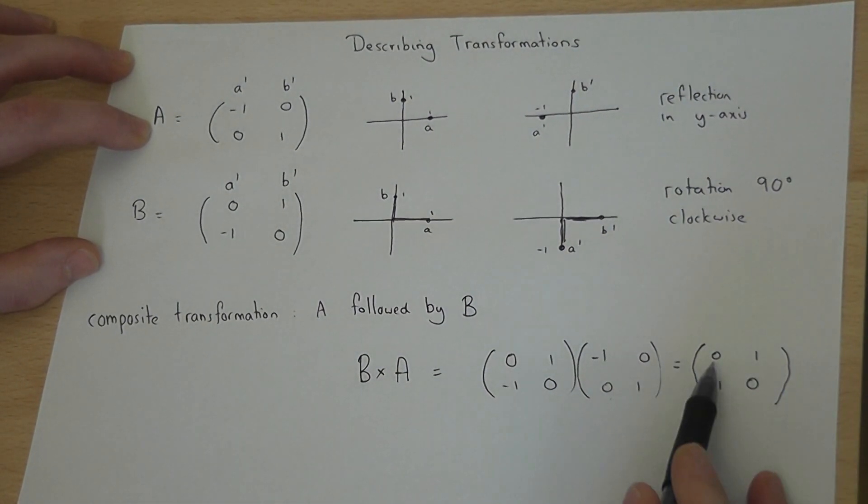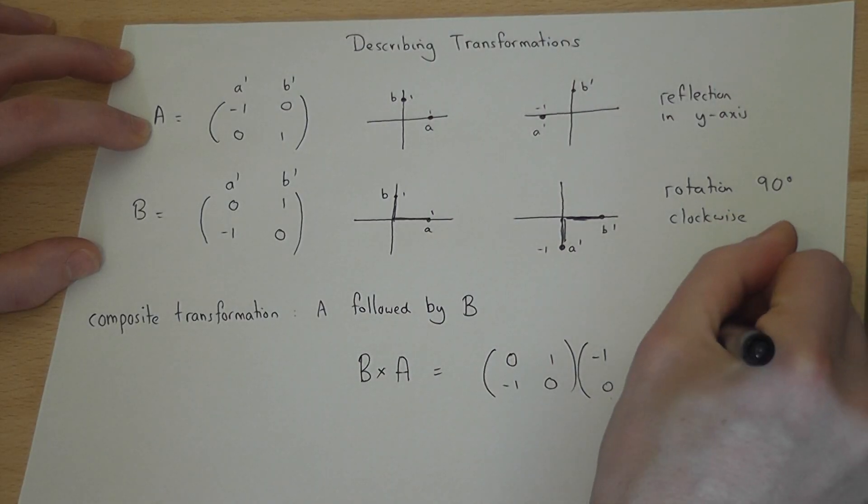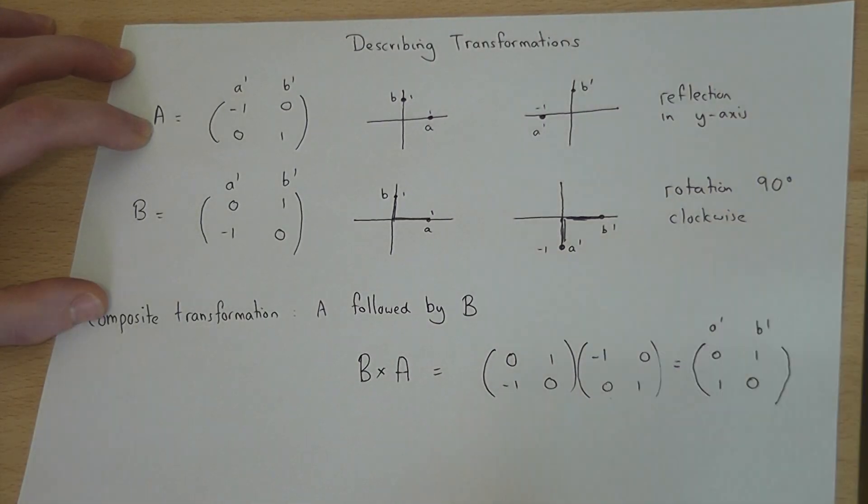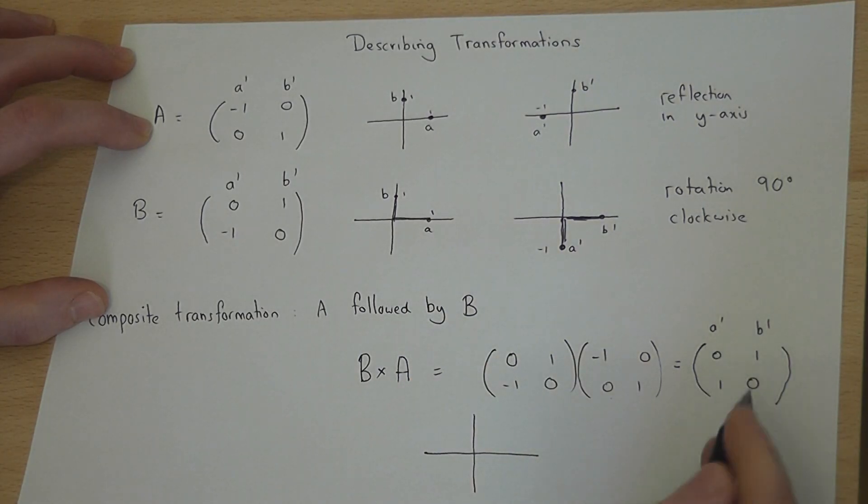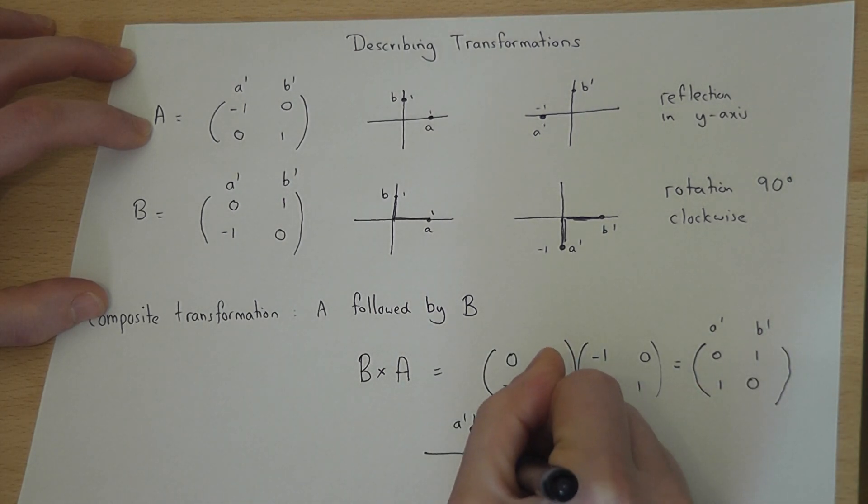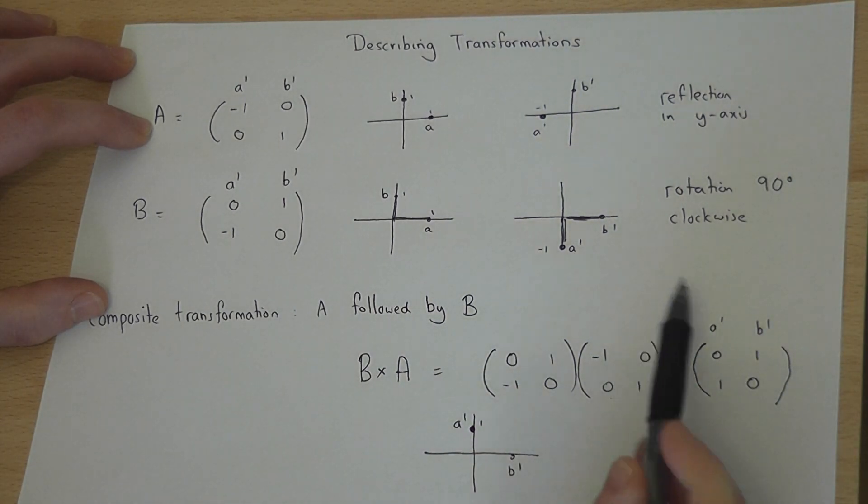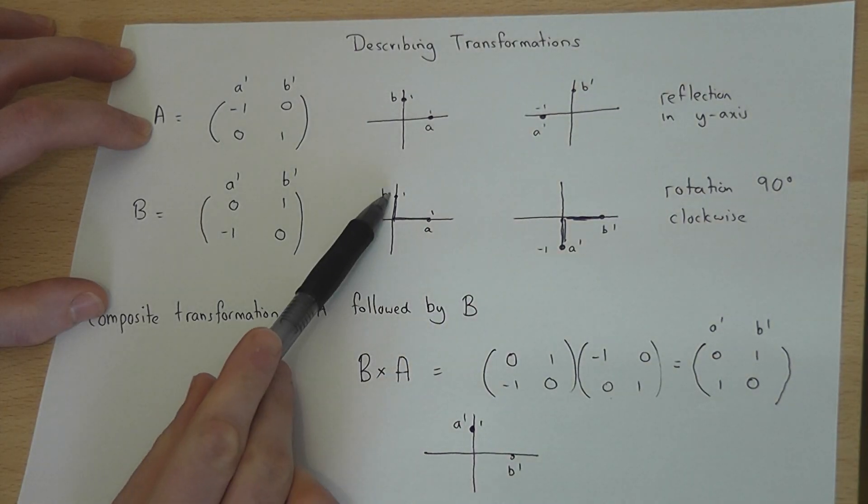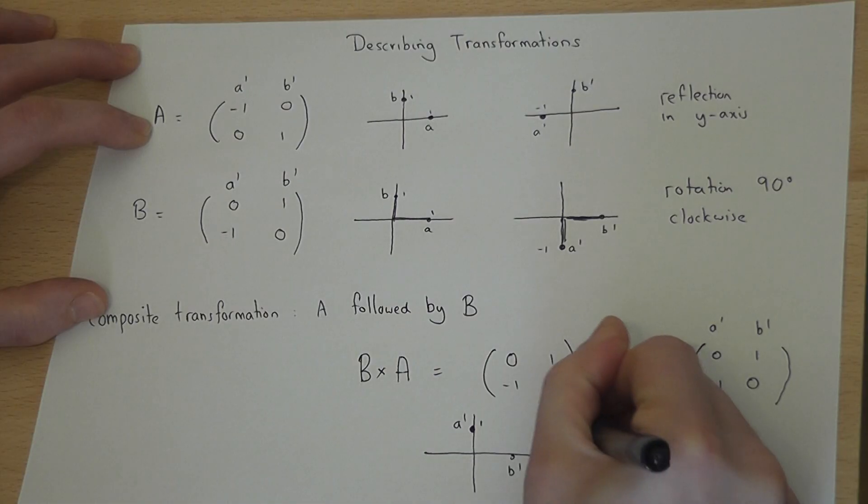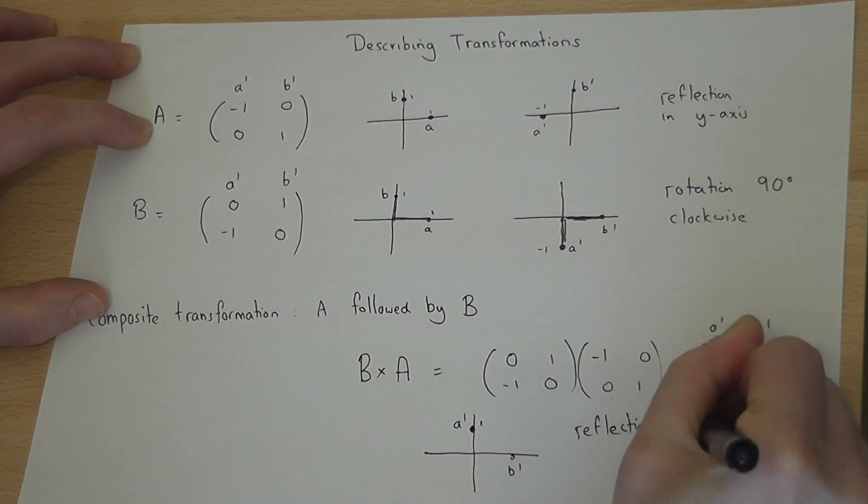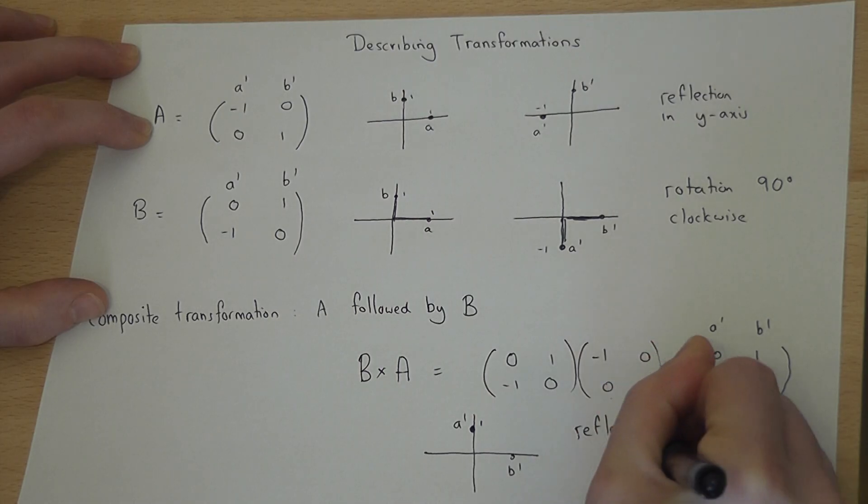And the question could be, what does that represent? Well, this is A dash, this is B dash. If I draw a quick sketch. A dash has gone to 0, 1. B dash has gone to 1, 0. And if you compare back to the original configuration, A and B have basically swapped around. So it's a reflection in the line Y equals X.